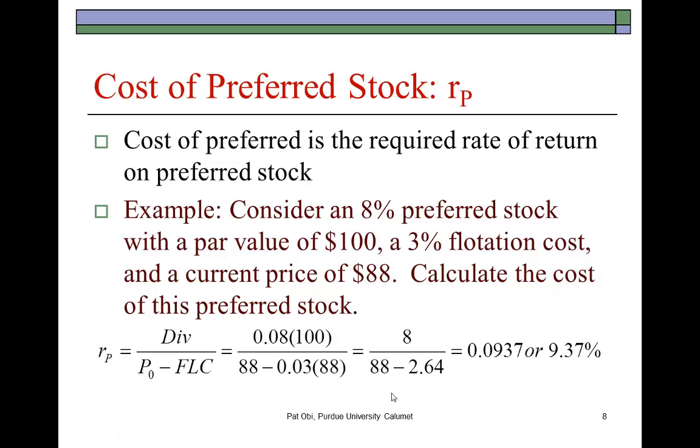Next up, cost of preferred stock. Preferred stock is easy to calculate because preferred stock is a perpetuity in that it pays fixed dividends indefinitely, in which case cost of preferred stock would be the dividend divided by price. But the price has to be adjusted by the flotation cost, which is how much it'll cost the firm to sell a new issue of preferred stock. In this example, where the dividend rate is $8 per share and price is $88, and flotation cost is 3% of price or $2.64, this solves to be 9.37%.